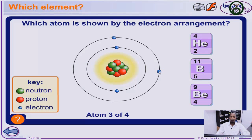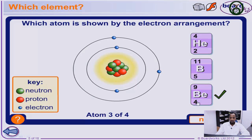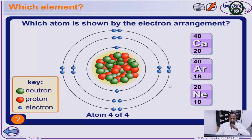Which atom has four electrons — which is also equal to a proton number of four? Is it beryllium? Yes, because the atomic number is 4, the number of electrons is 4, and the number of protons is 4. So the electron arrangement with 2 in the first shell and 2 in the second shell corresponds to beryllium. Now let's move on to the next atom and look at another electron arrangement.